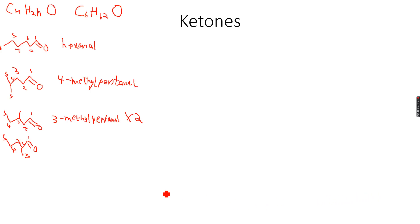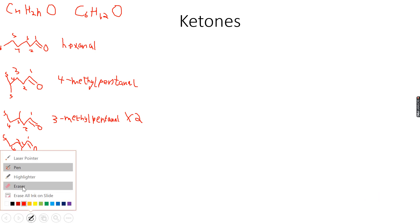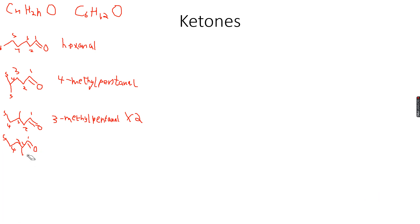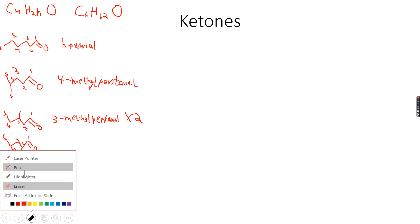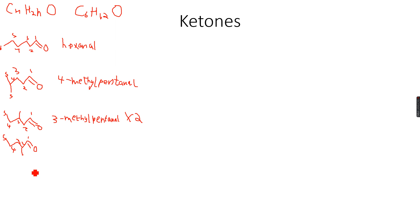The longest chain is the five carbon chain, not the three carbon chain, so we will remove the three from here. This will become one, two, three, four, and five. We have five carbons in the main chain, and the methyl group is on the second carbon atom, so this becomes 2-methylpentanal.